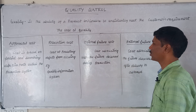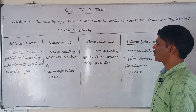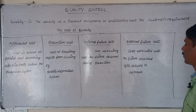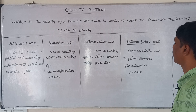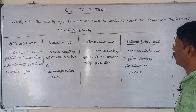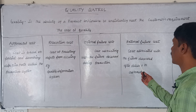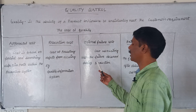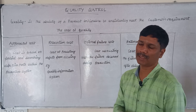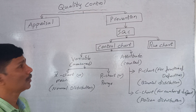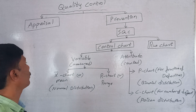Internal failure cost is the cost associated with failures observed during production. External failure cost is the cost associated with failures discovered after delivery to the customer. You can use quality control tools such as appraisal and prevention to manage these costs.